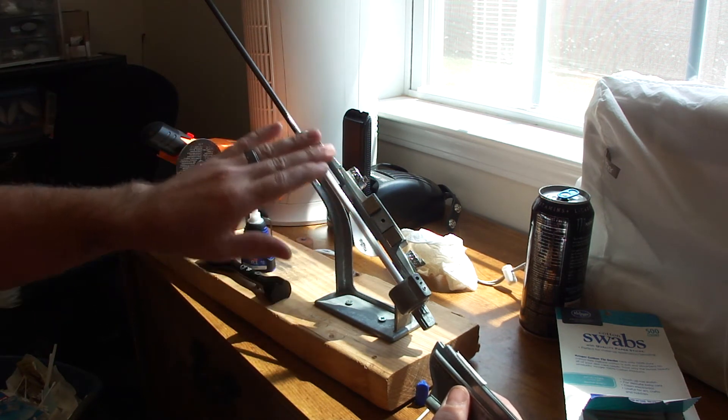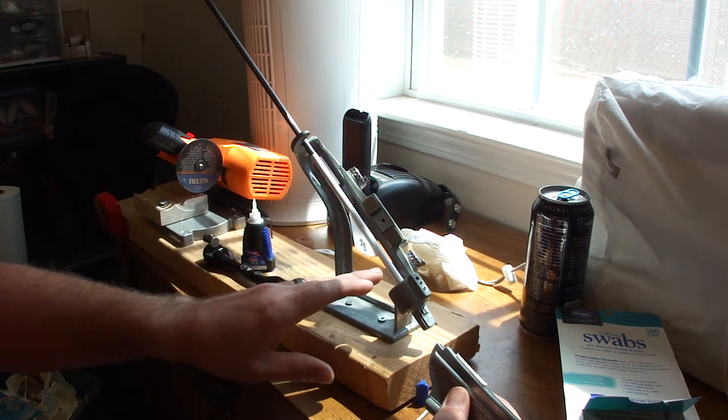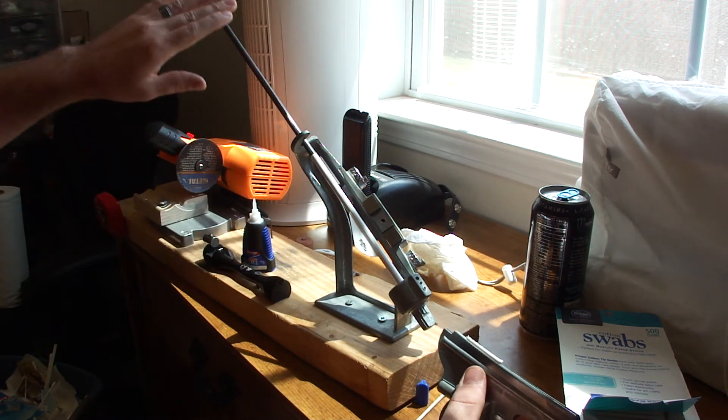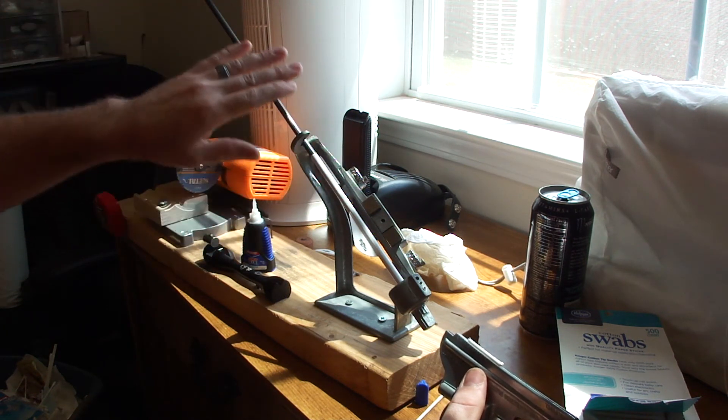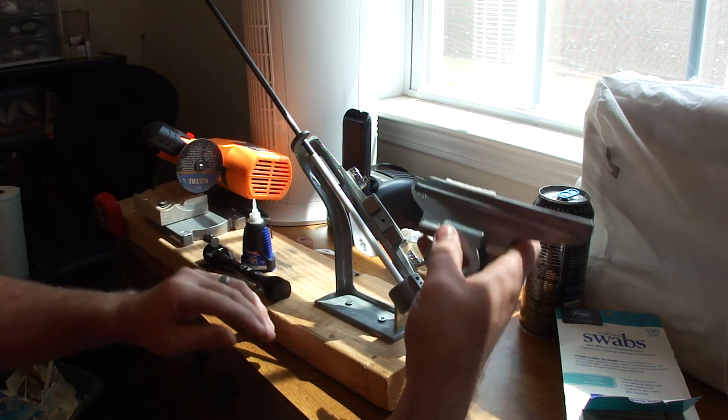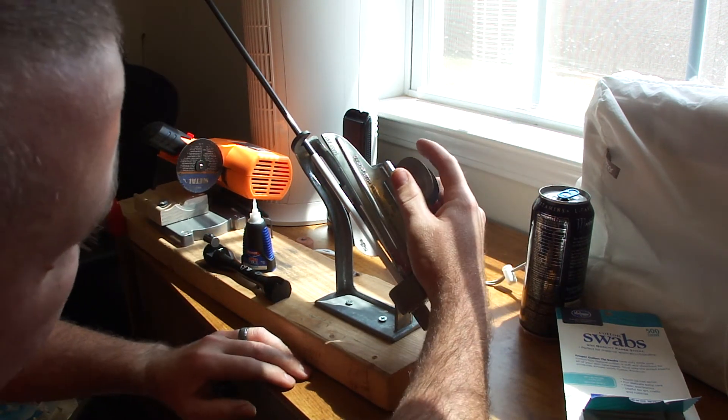So I just like to move my fletchings to where they need to be. Kind of keep it closer to the back, but I like to put it to where, if you move them a little further forward, you actually get a little more FOC than them all the way back. It's just how it works. You move the weight towards the front of the arrow shaft.